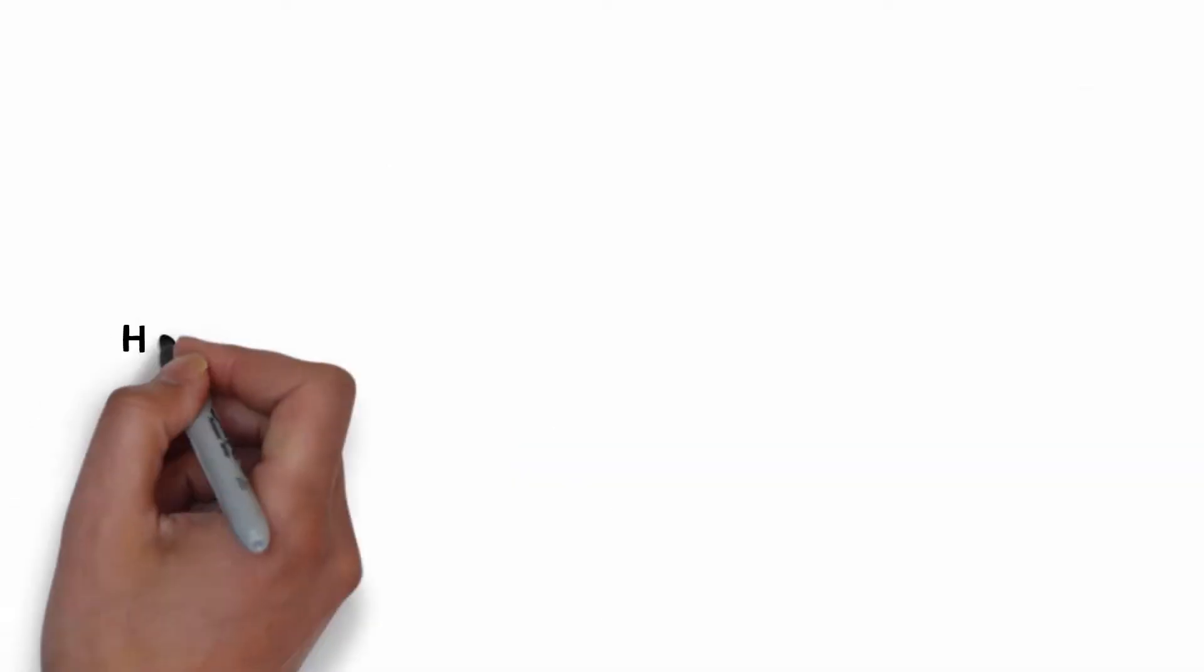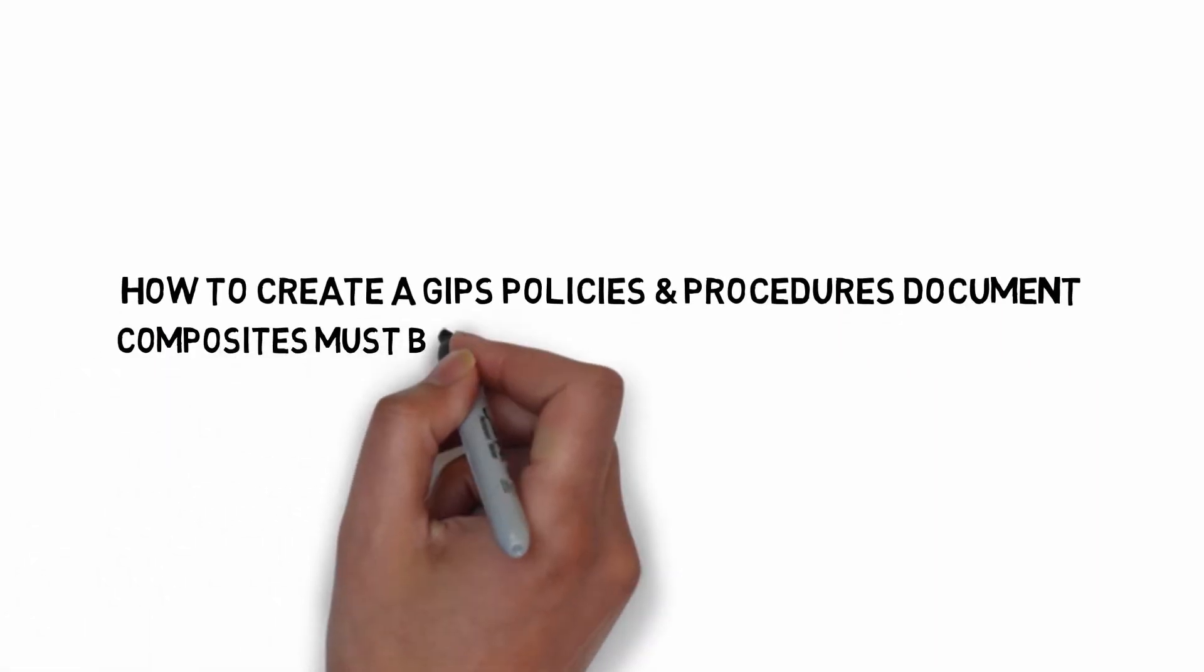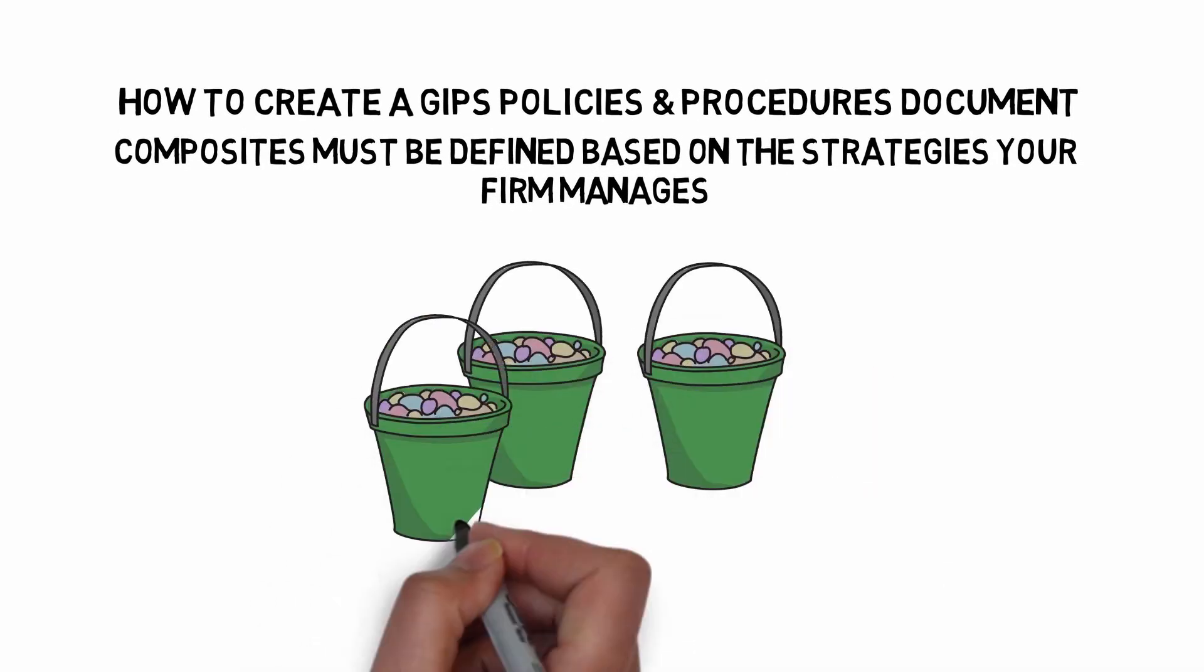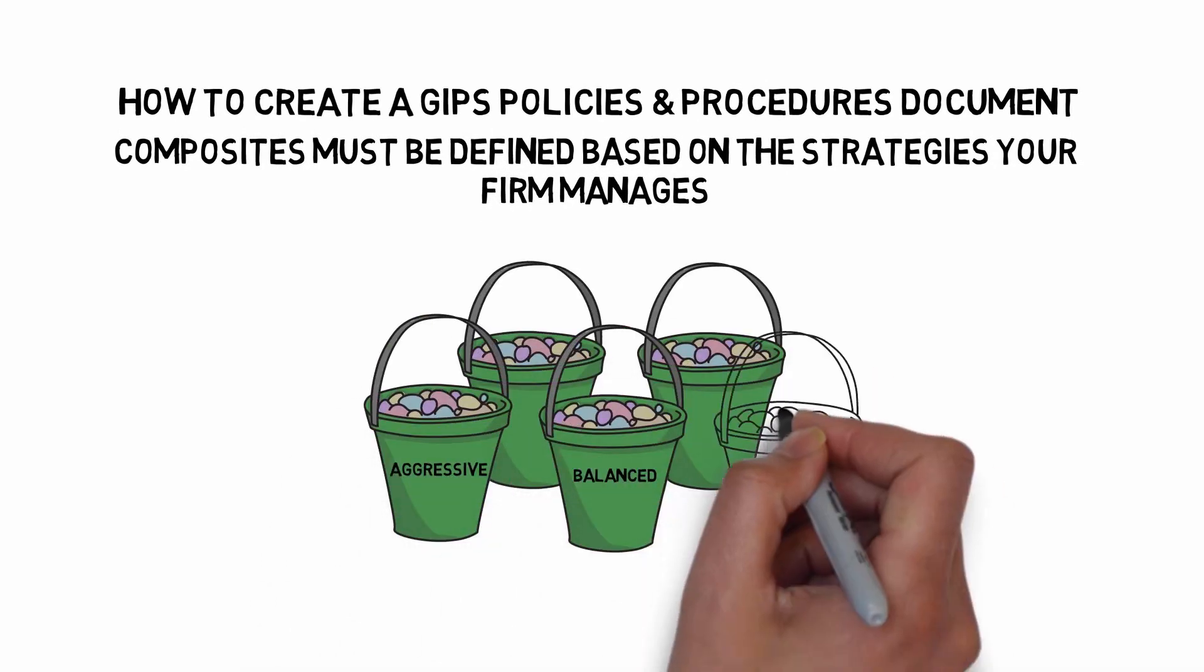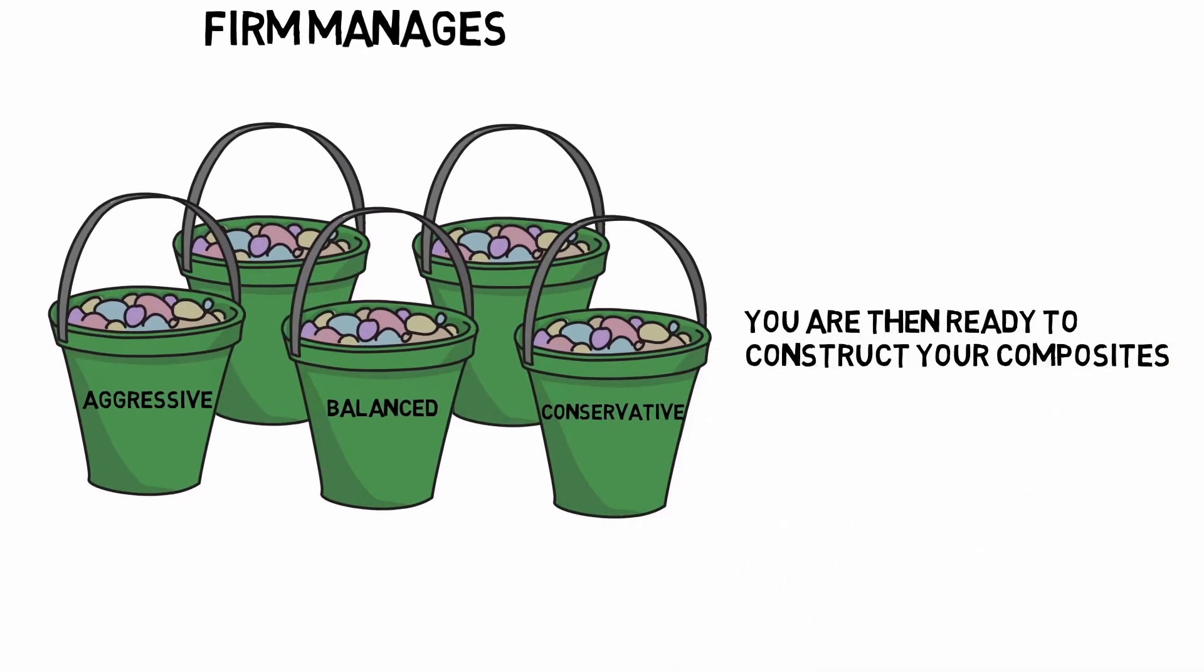As discussed in our previous two-part blog post, How to Create a GIPS Policies and Procedures Document, composites must be defined based on the strategies your firm manages. Once your composites are defined and composite rules established, you are then ready to construct your composites.